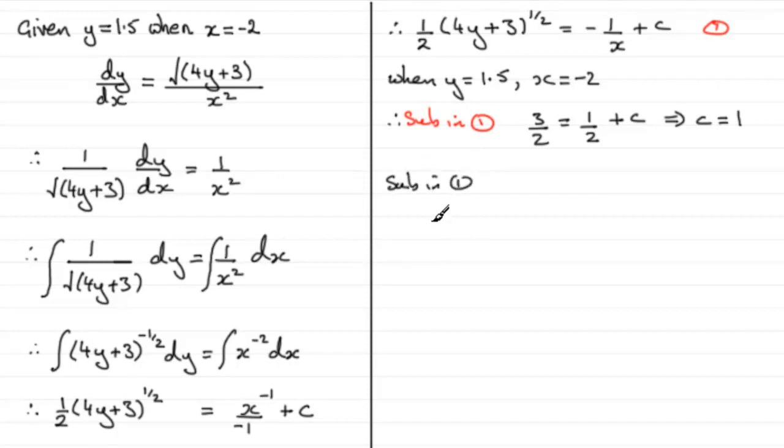So sub in 1, and we've got half of 4y plus 3 to the power half equals, I'm going to write the c first, it looks better, 1 minus 1 over x. Now remember we've got to make y the subject from here on.